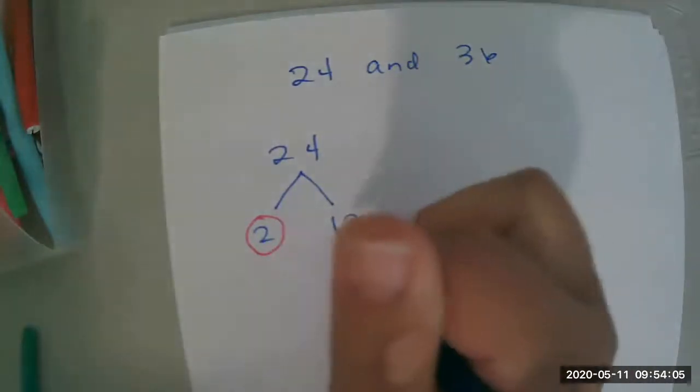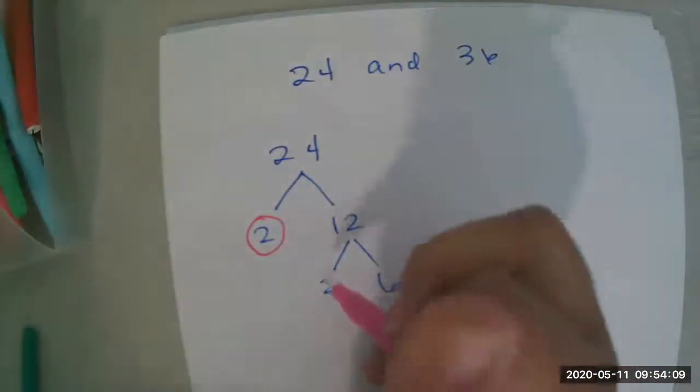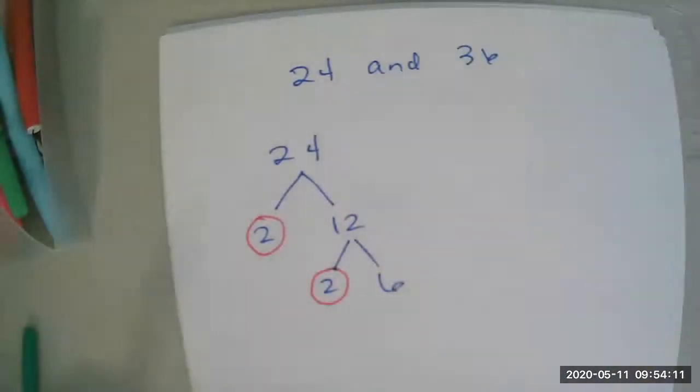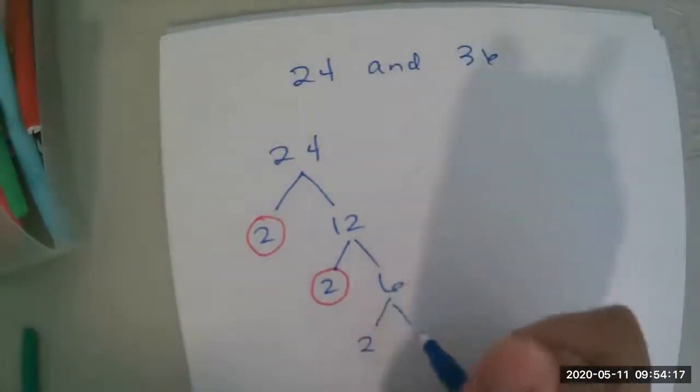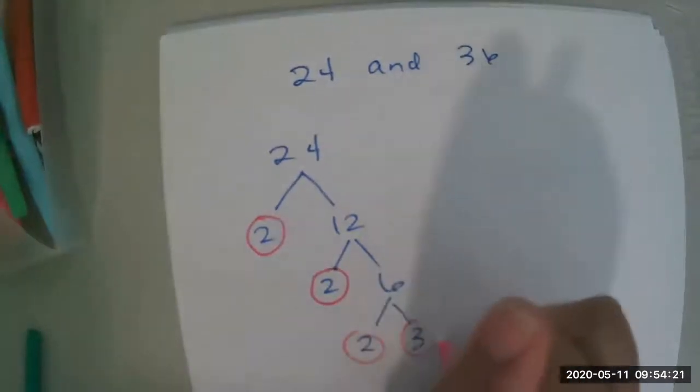I'm going to break down 12 into 2 and 6. And anytime I see a prime number, a number that can divide into only 1 and itself, I circle it. I'm going to break down 6 into 2 and 3. Great.